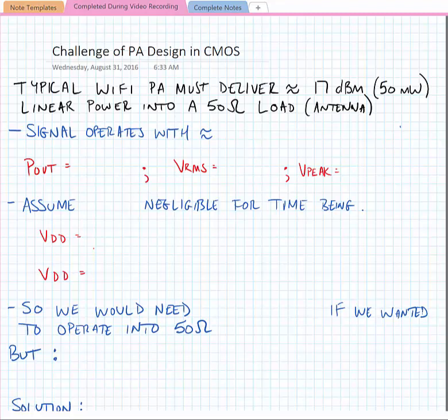Okay, so let's talk about the challenges of PA design in CMOS. For a typical WiFi power amplifier, it must deliver about 17 dBm or 50 milliwatts of linear power into a 50 ohm load, which is our antenna.